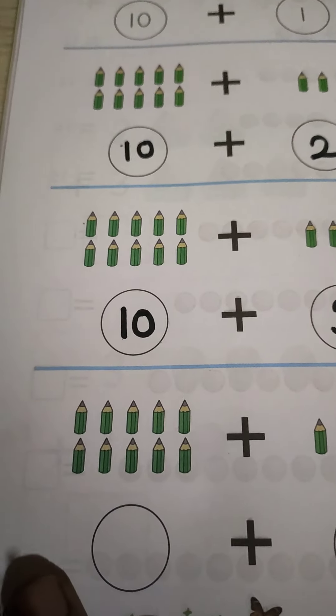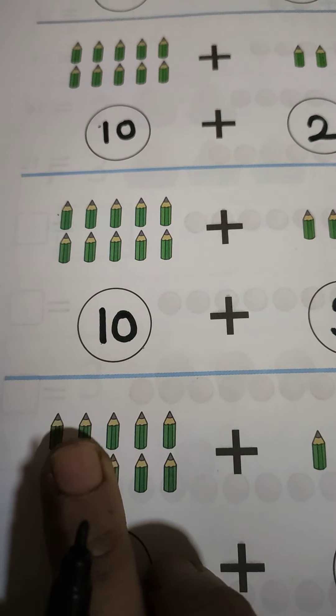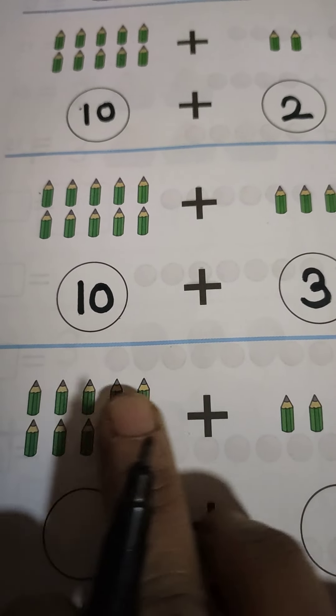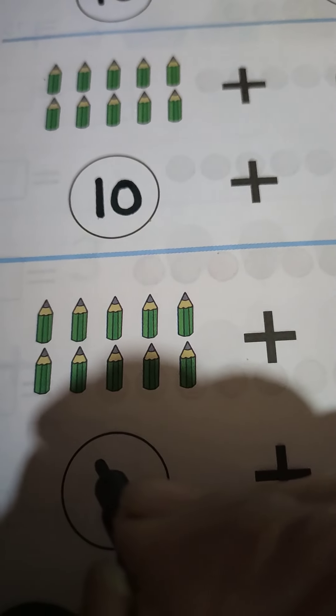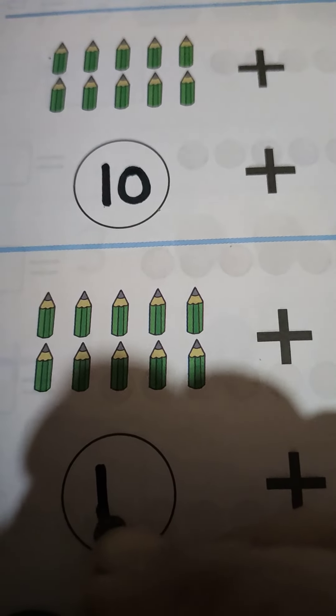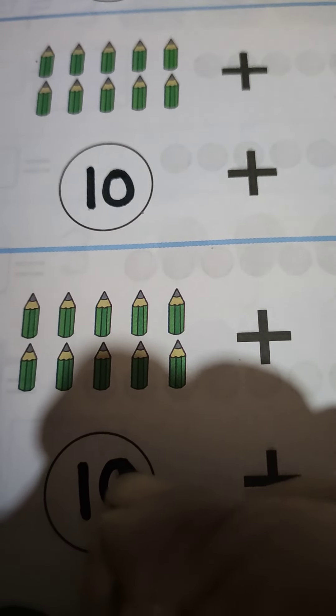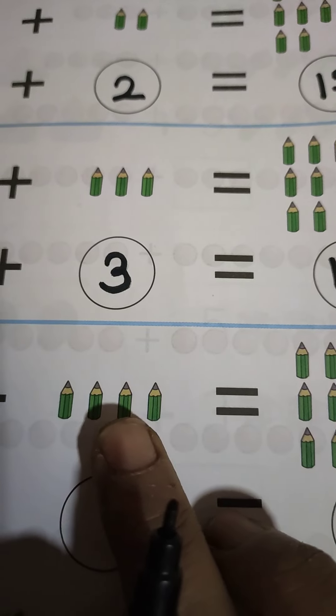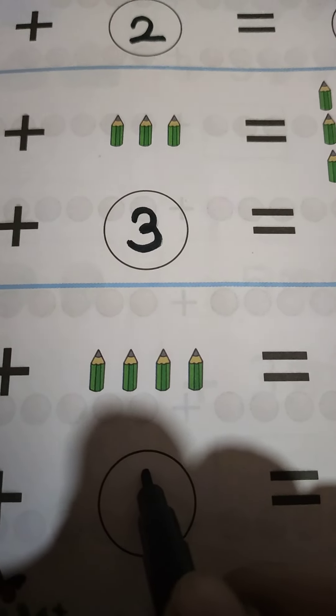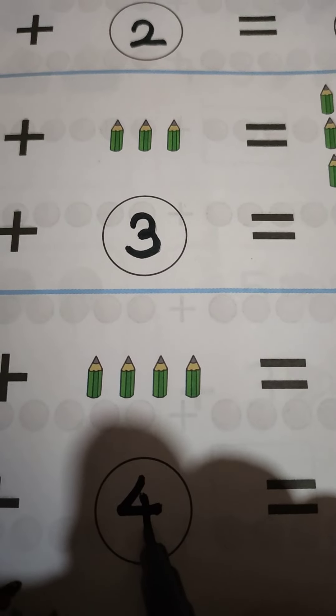Our next example. Same. Now tell me how many pencils over here. Yes. Write 10 pencils plus here 1, 2, 3, 4. So write here 4.